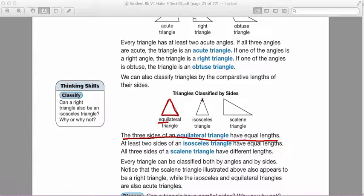In an isosceles triangle, only two sides have the same length. That third side will be a different length. And in a scalene triangle, none of the sides are the same length. So now we can actually look at any triangle and classify it using both angles and sides.